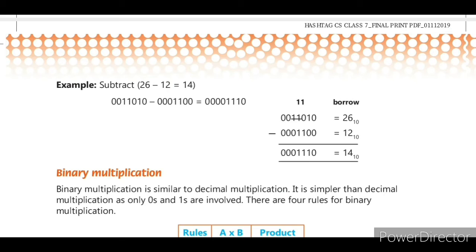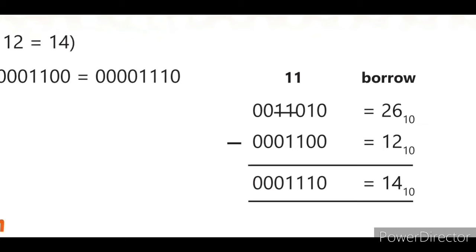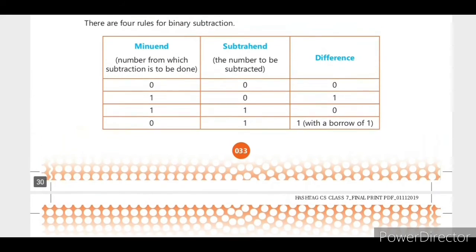Example: 26 minus 12 equals 14. Convert to binary: 26 is 0011010, 12 is 001100. Subtracting: 0−0=0, 1−0=1, then 0−1 requires borrowing from the next digit giving 10−1=1, and the borrowed digit position becomes 0. Working through all digits, the result is the binary equivalent of decimal 14.